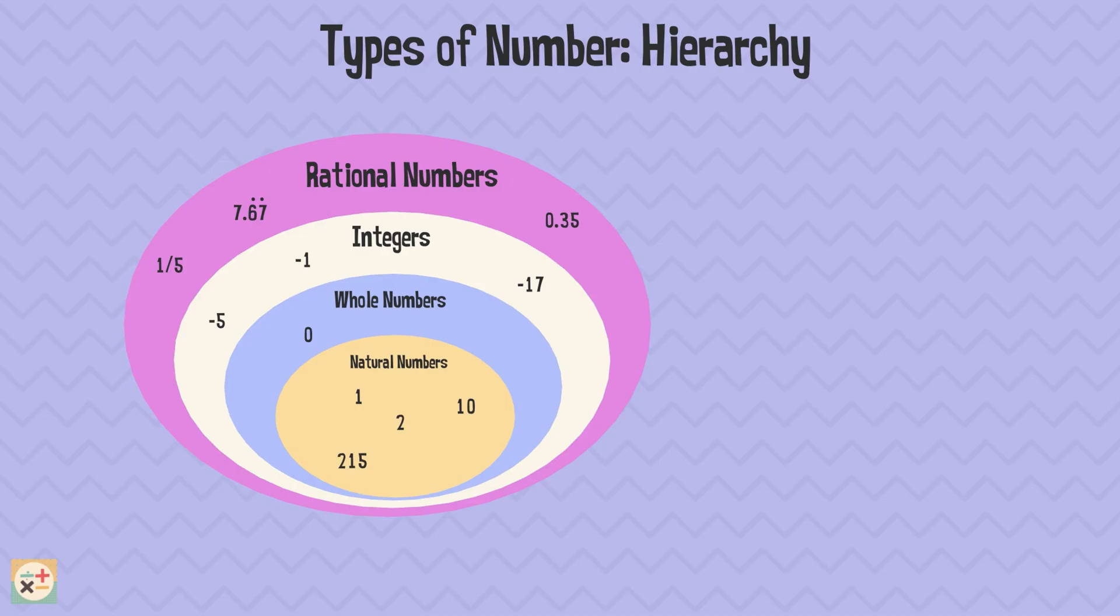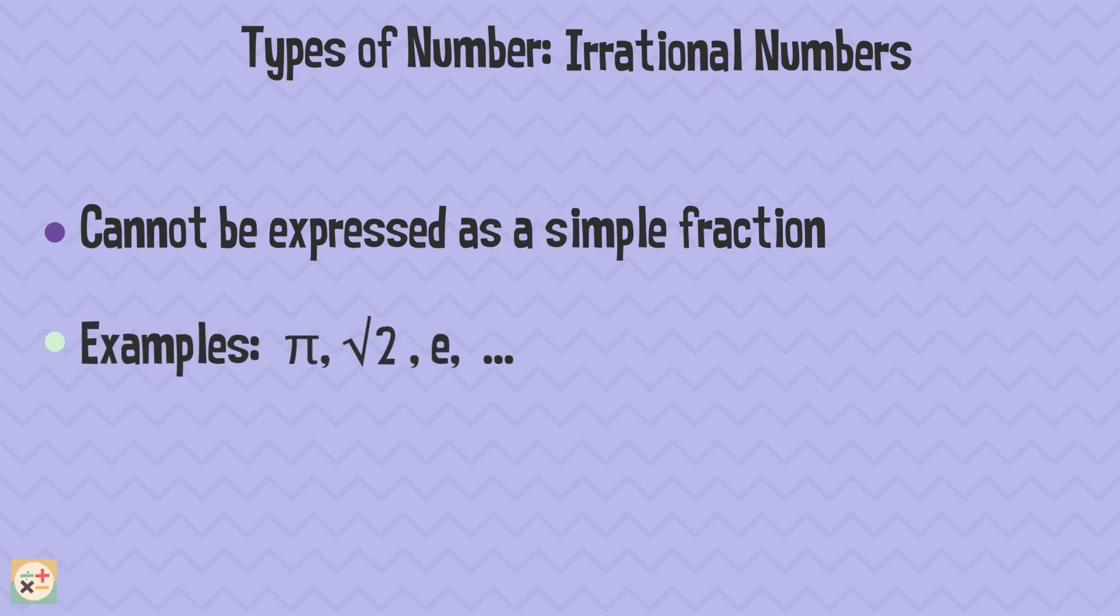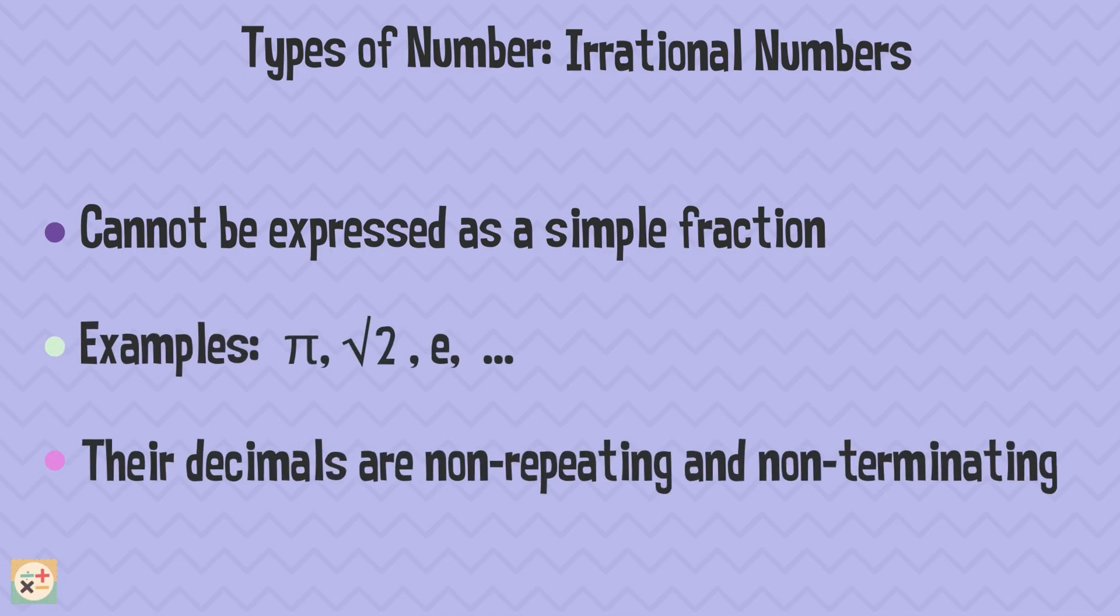But what about numbers that can't be written as a fraction? That's where irrational numbers come in. Irrational numbers have decimal expansions that go on forever without repeating. Famous examples include the square root of 2, pi, and Euler's number. You can't write these numbers as simple fractions, and their decimals go on endlessly without a pattern.